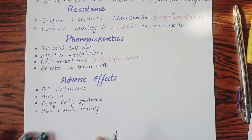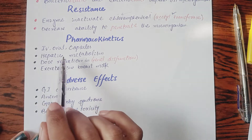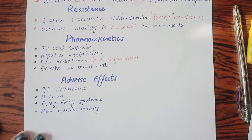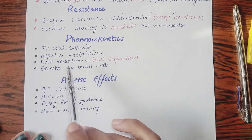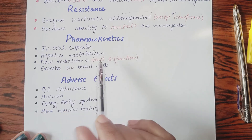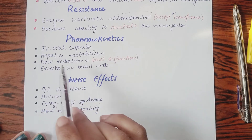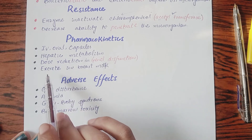In pharmacokinetics, chloramphenicol can be taken intravenously or orally. It is available in different forms: capsules, ophthalmic solution, IV solution, and suspension. It undergoes hepatic metabolism, and its metabolite is glucuronide, which is ultimately secreted from the renal tubules. Dose reduction is required in renal dysfunction patients because its metabolism is hepatic.